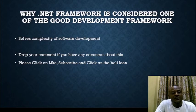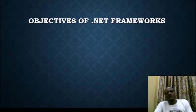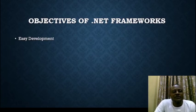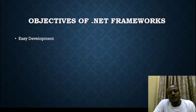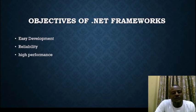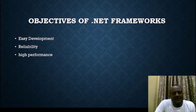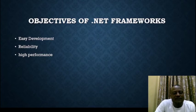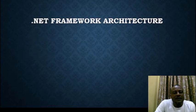What are the objectives of the .NET Framework? The objectives are: first, easy development — that was the main reason it was built. Second, reliability — the core programming has to be reliable. Third, high performance — we don't want to write a program that takes too long to load or is complex to install. You build the application, deploy it, and it performs fast and well.